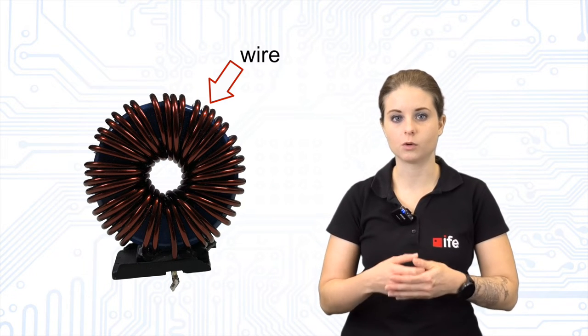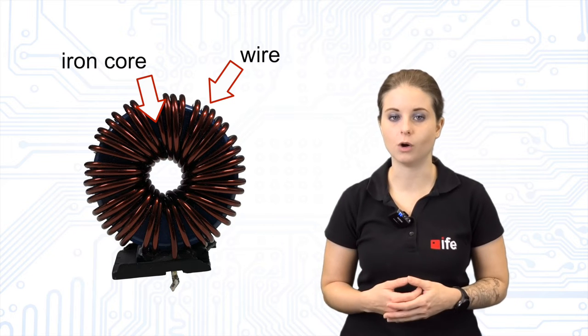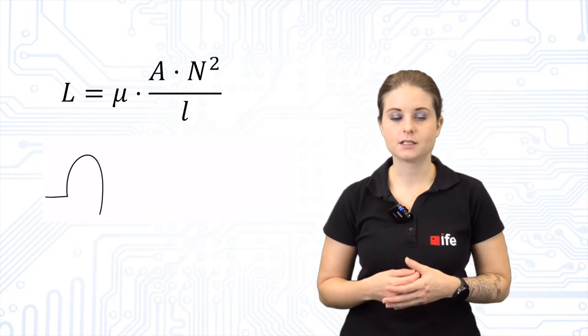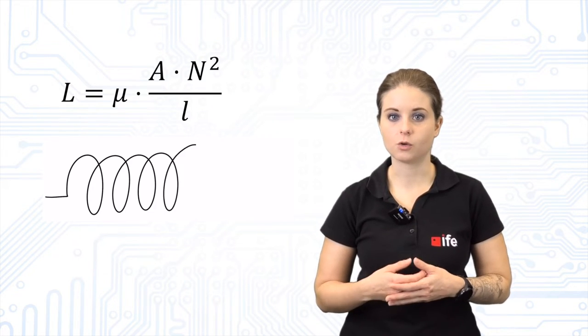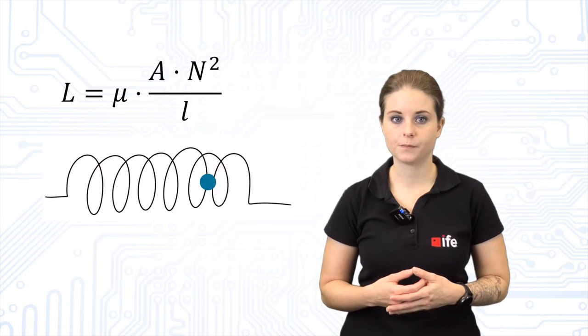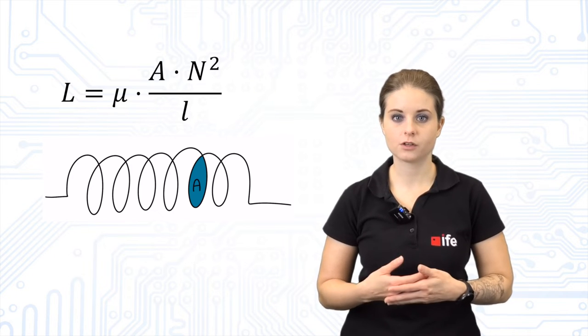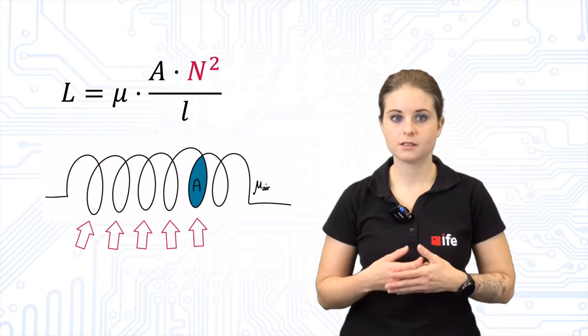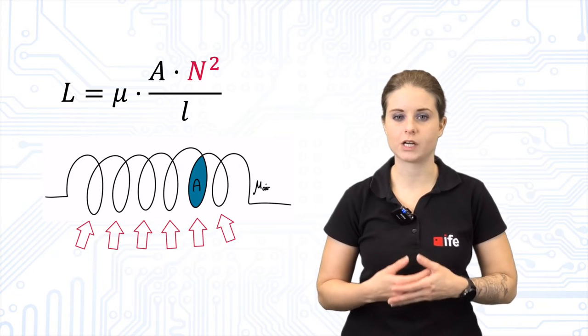An inductor is a coil which means an electrically conductive wire that has been wound, usually around an iron core. Its inductance depends on the material of the core and on the geometry. The most dominant factor is the number of windings since the inductance increases quadratically with it.